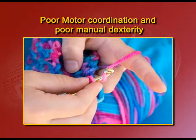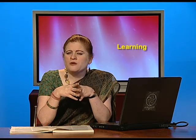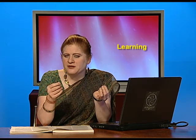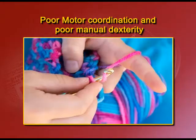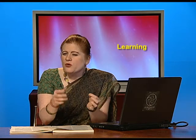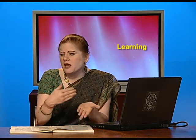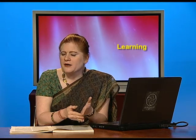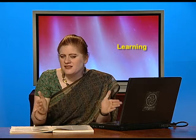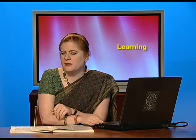Another symptom is poor motor coordination and poor manual dexterity. Tasks which involve very precise manual movements requiring dexterity — such as putting a thread in a needle, moving the steering wheel of a car, or coordinating hands and feet together as in swimming — are difficult for such people to acquire, because their motor abilities and dexterity are very limited.